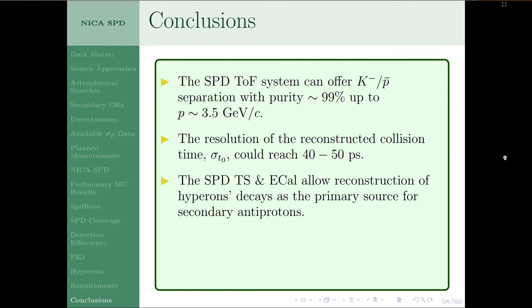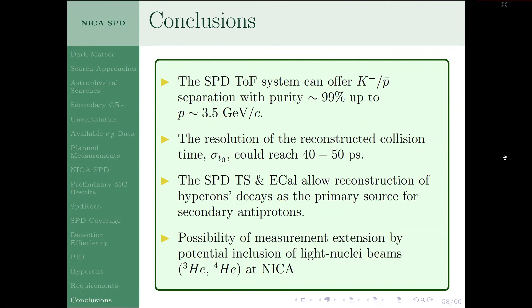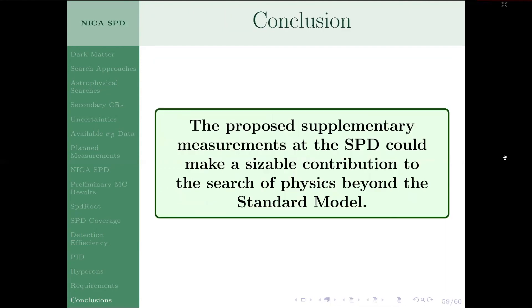In conclusion, we expect SPD can cover up to 3.5 GeV momenta to separate anti-kaons and antiprotons with ~99% purity, given time-of-flight resolution of ~70 picoseconds and event time reconstruction of 30–50 picoseconds. We also expect to reconstruct hyperon decays using the tracking system and ECAL, which represent a primary source of secondary antiprotons, provided secondary vertex identification is possible. We hope to extend measurements to include more nuclei with the NICA collider beams. The SPD detector can make a sizable contribution to the search for physics beyond the standard model in terms of the indirect detection of dark matter.